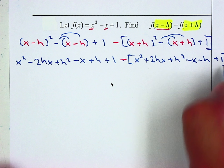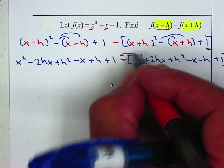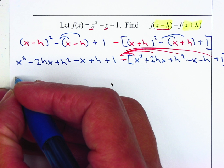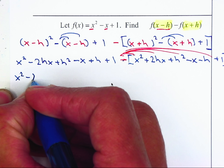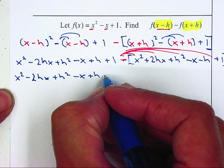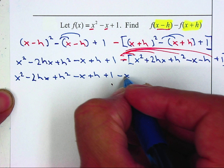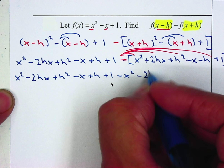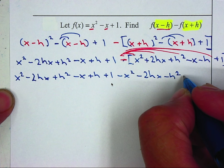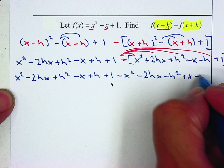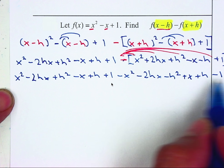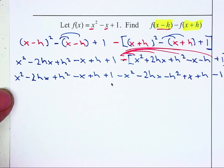Close the bracket and distribute the negative to everything inside. Bringing it down: x squared minus 2hx plus h squared minus x plus h plus one, minus x squared minus 2hx minus h squared plus x plus h minus one. When you multiply by negative, just change the sign of everything inside. Now I can combine like terms.